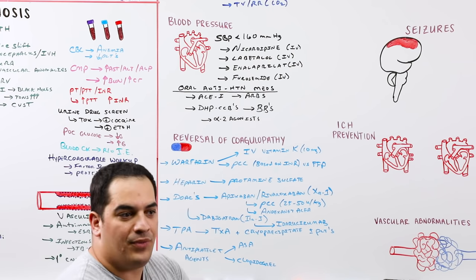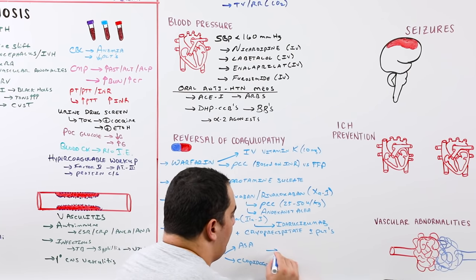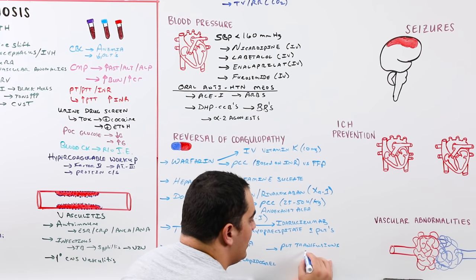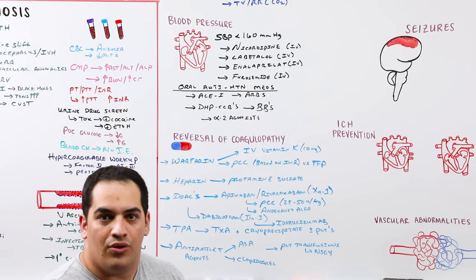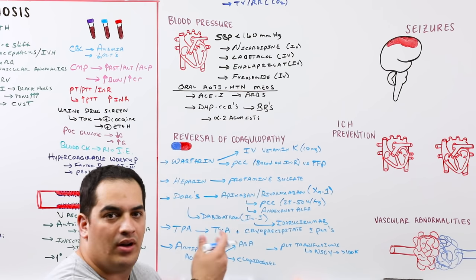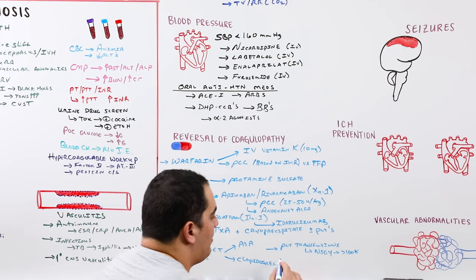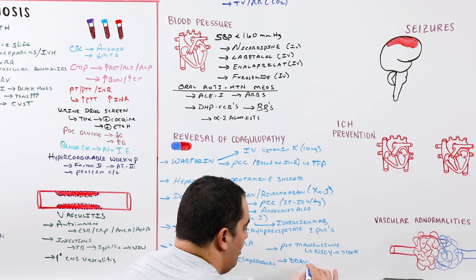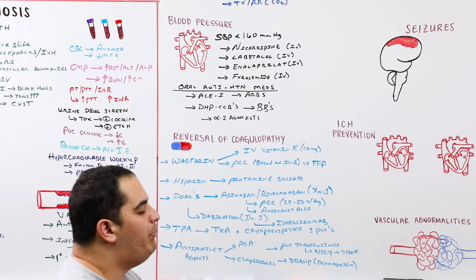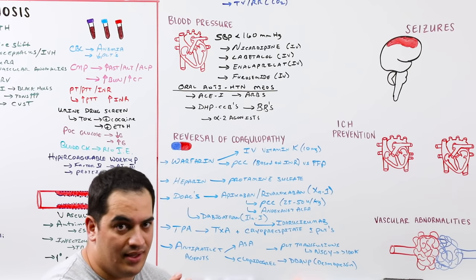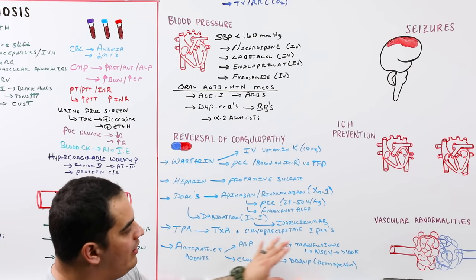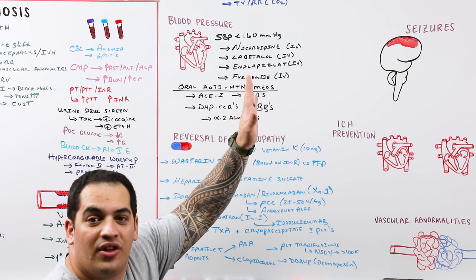For antiplatelet agents like aspirin and clopidogrel, there is not much evidence to support platelet transfusions. Platelet transfusions may be considered only if a neurosurgical intervention is planned and platelets are less than 100,000. DDAVP (desmopressin) is another option, but evidence for reversing antiplatelet agents is limited.